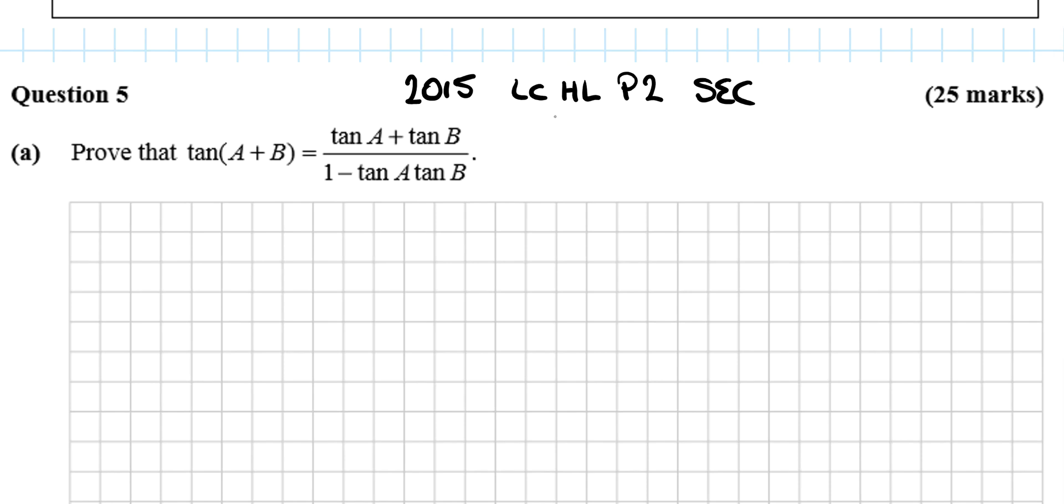Okay, so in this video we're looking at 2015 SEC Leaving Certificate Higher Level Maths Paper 2. It begins with a proof, so if you haven't learned this already, I'd recommend going to the proofs playlist on this YouTube channel and learning the eight trig identities. They're really worth it—very easy marks when you have them learned.